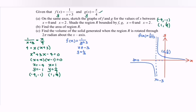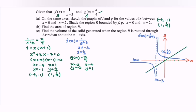Next, focus on g(x) = x/4. This is clearly a straight line graph. Substituting x = 0 gives y = 0, and substituting x = 4 gives y = 1. So we have points (0, 0) and (4, 1). Sketch the straight line graph for g(x) = x/4.